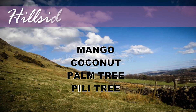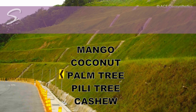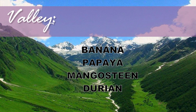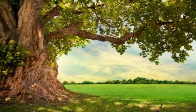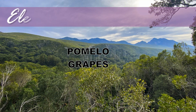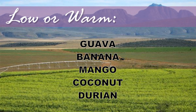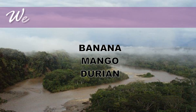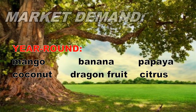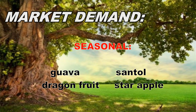Based on location, the following plants are suited for hillside, slope, and valley areas. Based on climate, the following plants are best suited in elevated, low or warm, dry season, and wet season conditions. Some fruits are available the whole year round, while others are seasonal fruits in the country.